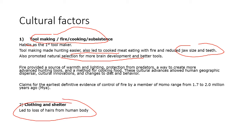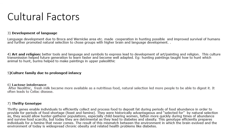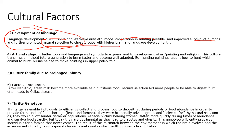Clothing and shelter led to hair loss because humans no longer needed hair for warmth. The development of language — enabled by Broca's and Wernicke's areas — made cooperation and hunting possible, improving survival chances. Natural selection therefore favored groups with higher brain and language development, as cooperative hunting was far more effective.